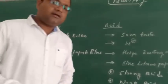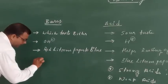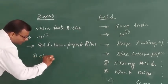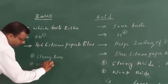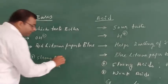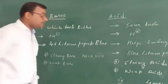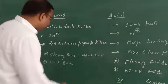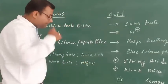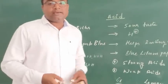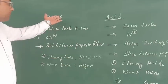Again, there are two types of bases: strong bases and weak bases. Examples of strong bases are sodium hydroxide and potassium hydroxide. Weak bases include ammonium hydroxide, magnesium hydroxide, and calcium hydroxide. A very famous example of a weak base is ammonium hydroxide. So these are the acids and bases.